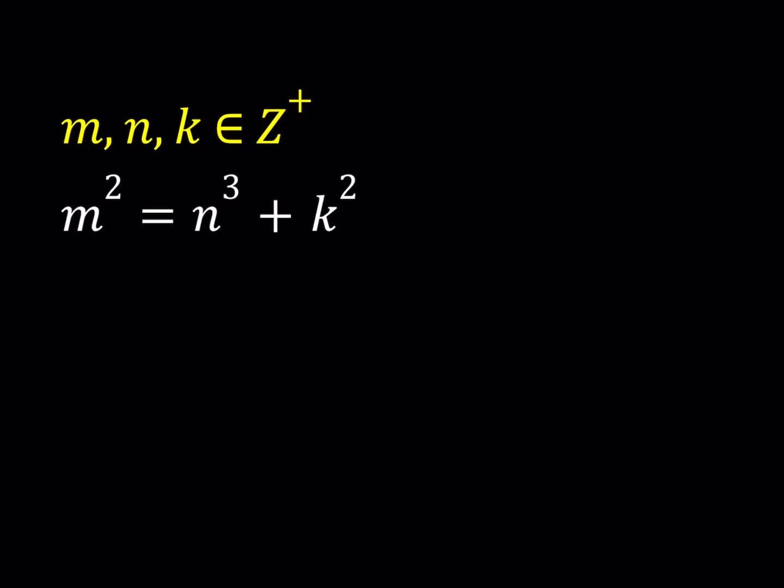Hello everyone. In this video, we're going to be solving an equation with integer solutions, actually positive integer solutions. m, n, and k are positive integers, and we're looking for solutions to this equation: m squared equals n cubed plus k squared.